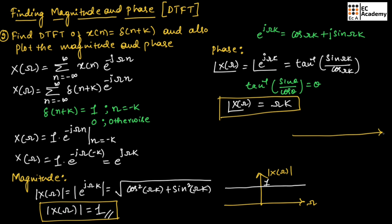Now let us plot the phase. Taking ω on the x-axis, we plot the phase of X(ω). If ω = 0, the value is 0. If ω = 1, the value is k. If ω = 2, the value is 2k. Joining these points gives a straight line. For negative values of ω, the line extends in the negative direction. This is the phase plot. This covers how to find the magnitude and phase of the DTFT. I hope you have understood the topic. Thank you.